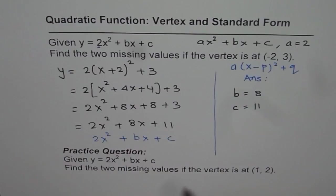I hope you appreciate it. Here is a practice question for you, a very similar one. Same equation, 2x² plus bx plus c. This time, find the two missing terms, b and c, if vertex is at (1, 2).